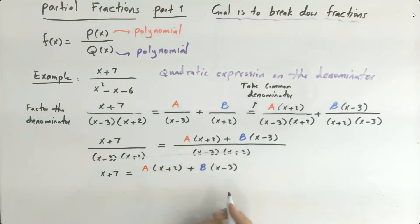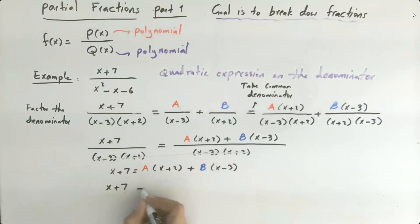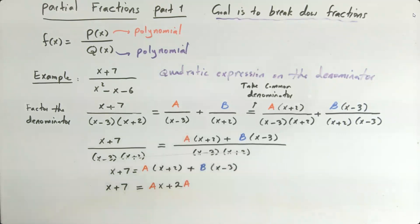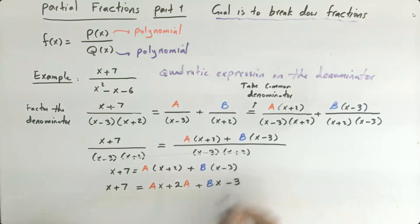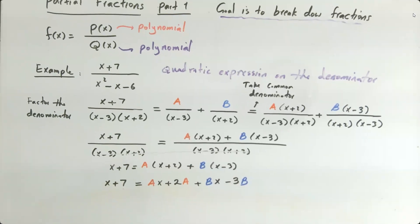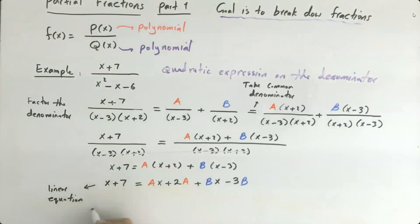It is not hard to set up a system of equations. On the left-hand side we have x plus 7. On the right-hand side, distributing A into the parentheses gives Ax plus 2A, and distributing B gives Bx minus 3B. So we are solving a linear equation that turns into a system of linear equations: we match the x terms and the constant terms on both sides.